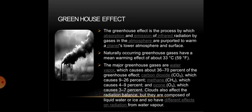The greenhouse effect is the process by which absorption and emission of infrared radiation by gases in the atmosphere warm a planet's lower atmosphere and surface. Naturally occurring greenhouse gases have a mean warming effect of about 33 degrees Celsius, or 59 degrees Fahrenheit.